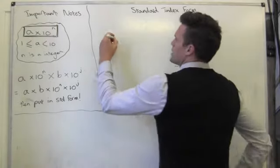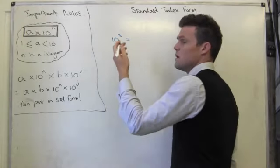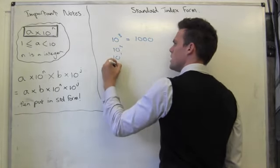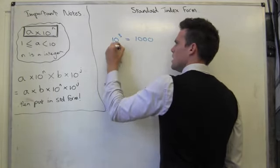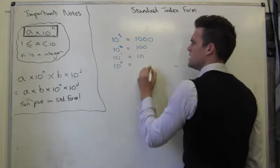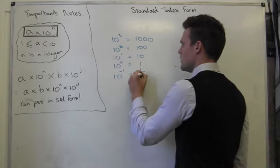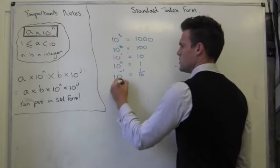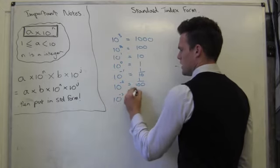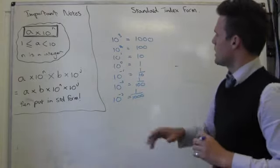So the first thing we look at are the powers of 10. 10 to the power of 3 is the same as 10 times 10 times 10, which is 1000. And if I do 10 to the power of 2, 10 to the power of 1, 10 to the power of 0, we start to see that my numbers are basically dividing by 10 each time. So 10 to the negative 1 is simply 1 over 10, and 10 to the negative 2 is 1 over 100, and 10 to the negative 3 is 1 over 1000. So this is where index form comes in.